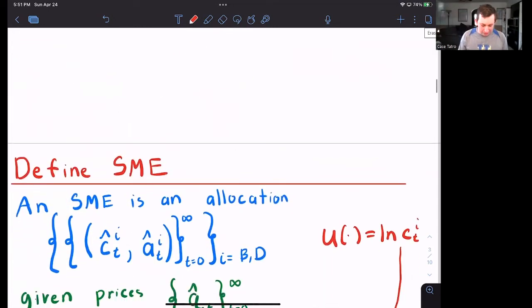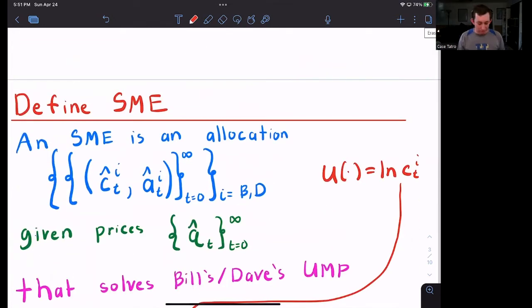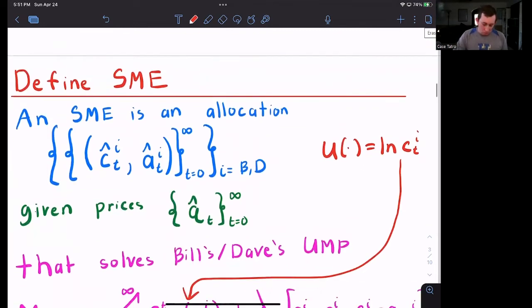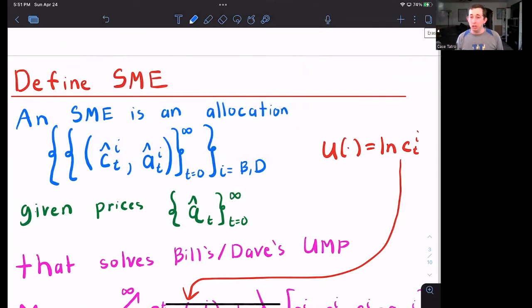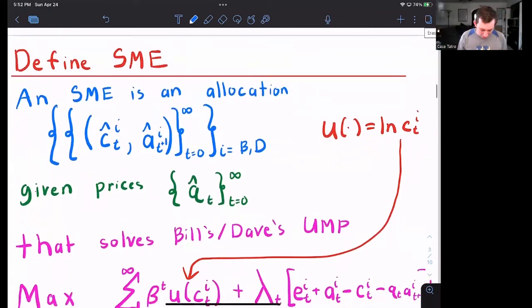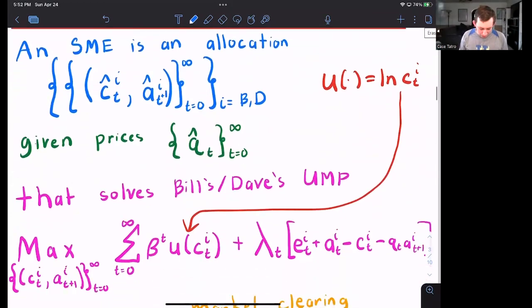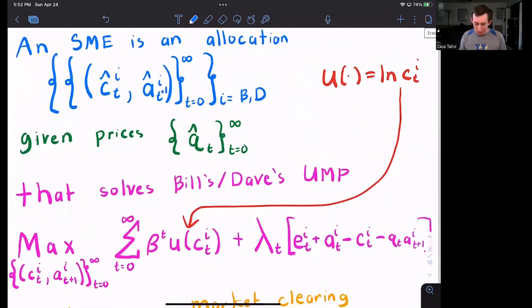Now, we said that the definition of the sequential market competitive equilibrium was the allocation where remember that now Bill and Dave don't only get to choose how much they want to consume today. They also choose how many assets they want for the next period or how many coconuts to borrow or lend. This is really T plus one. And we have prices QT in each period that solves Bill and Dave's utility maximization problem.